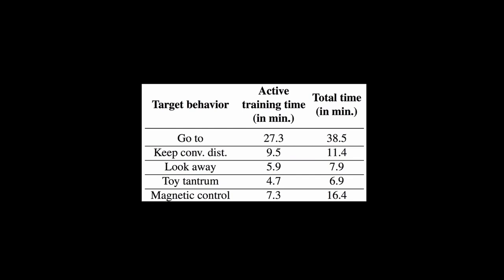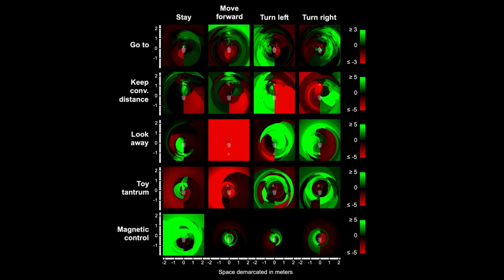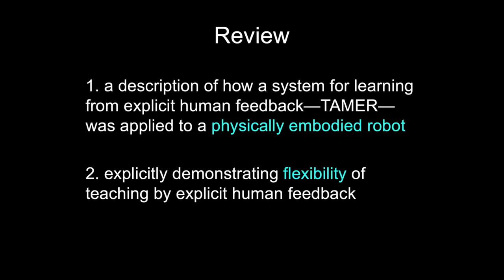Here's the training time. On the left is the actual time that Nexi's learning; the right includes time for just observing the learned behavior. Go-to is a lot longer because it was the first of the five and there was a learning curve as a trainer. Here are the five predictive models of human feedback — you can pause if you want to take a closer look. In summary: I described how TAMER can be applied to a physically embodied robot, including challenges and solutions, and explicitly demonstrated its flexibility by teaching five different behaviors. Thank you for listening.